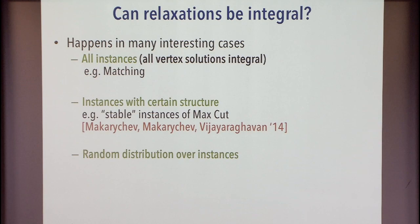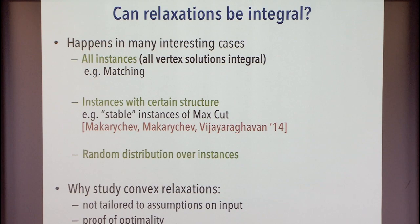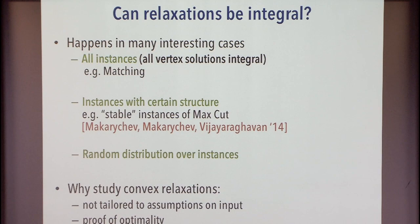These are the kinds of questions we're going to ask: for various problems, when you have suitable random distributions of inputs, when do you have integral solutions? Why focus on convex relaxations? One nice thing is that they are not tailored to any particular input distribution. For many of the examples I'll talk about, you could design a special algorithm taking into account the distribution, but it's nicer to show that a more general tool will actually solve the problem.